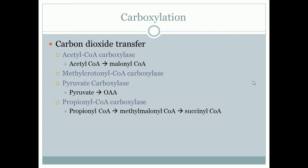Acetyl-CoA carboxylase is where you add a carbon onto acetyl-CoA to form malonyl-CoA. Pyruvate carboxylase converts pyruvate into OAA (oxaloacetate) — you're taking a three-carbon pyruvate and adding that carbon and oxygen to form OAA, which is involved in the TCA cycle.